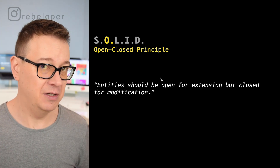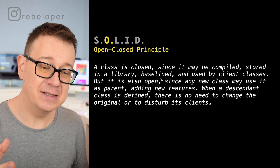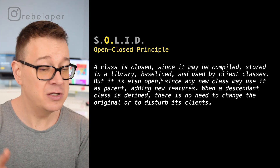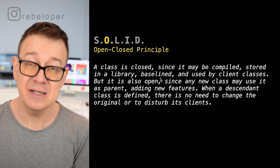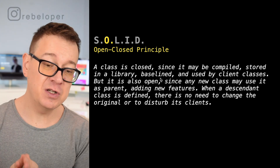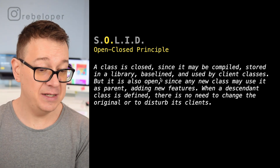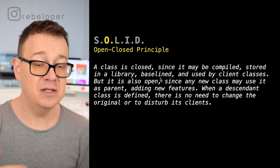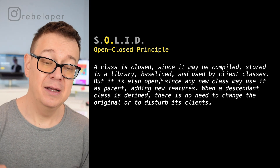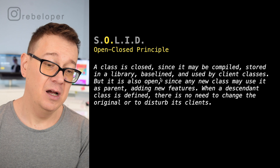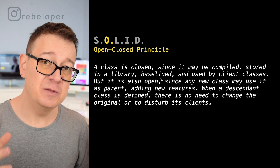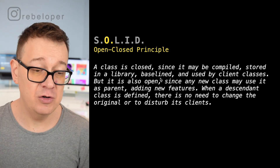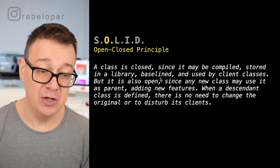Today we tackle the Open-Closed Principle, which in brief states: entities should be open for extension but closed for modification. A class is closed since it may be compiled, stored in a library, and used by client classes, but it is also open since any new class may use it as a parent, adding new features. When a descendant class is defined, there is no need to change the original or disrupt its clients. We'll show a bad way of doing things and a good way using the Open-Closed Principle.